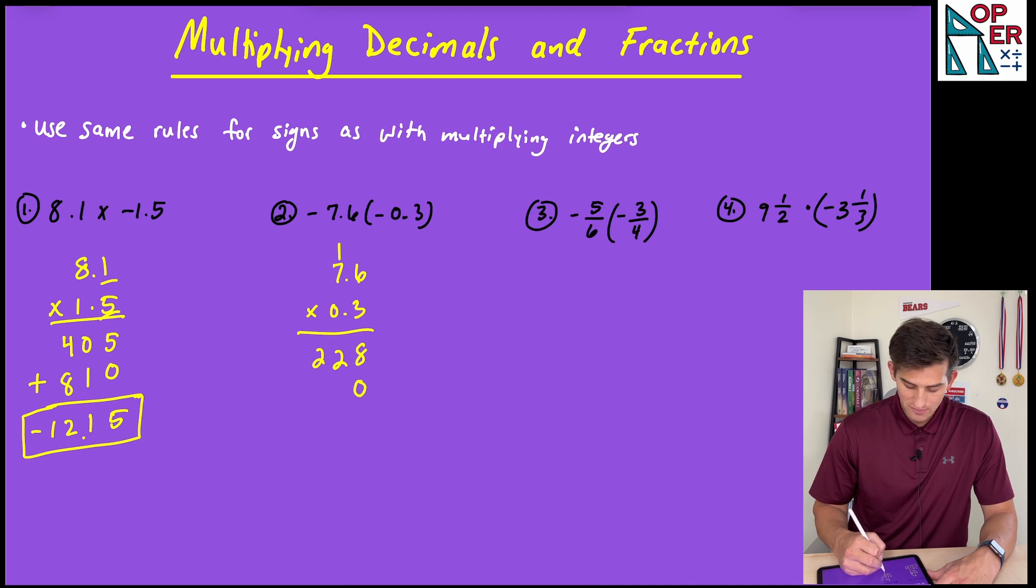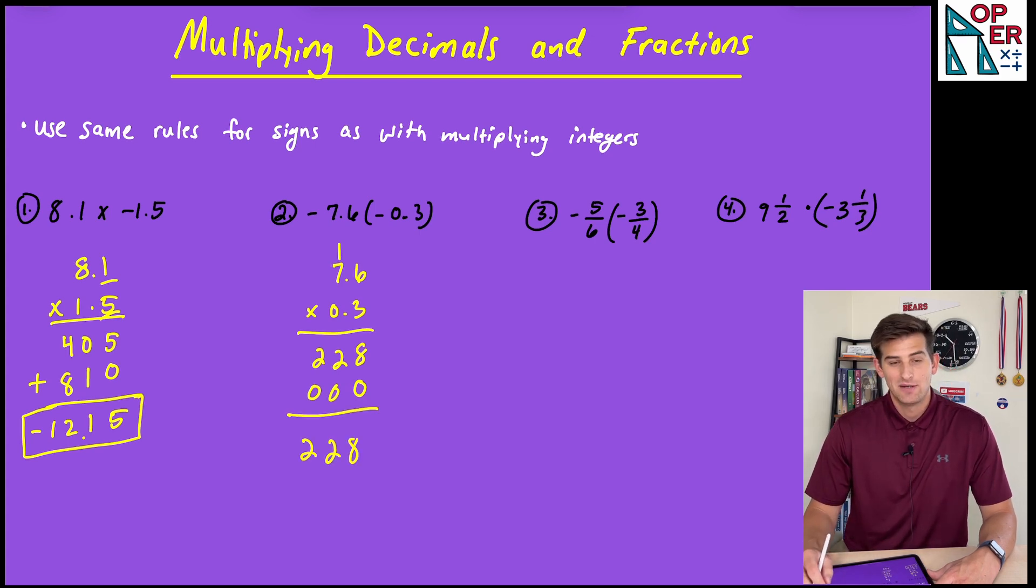Now notice what happens here. I put my placeholder 0, but then I'm going to do 0 times 6, 0 times 7. So really that just leaves me with 228. And I read it as 228 because now we have to add in our decimals. So we had 1, 2 decimal places. So 1, 2, our decimal will go between our two 2s. So our answer for number two would be 2.28.